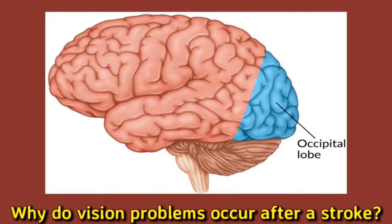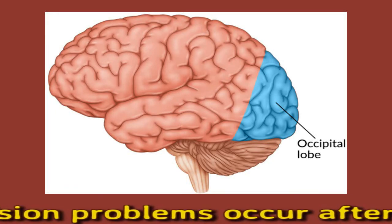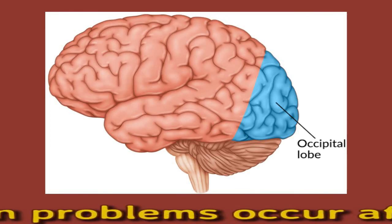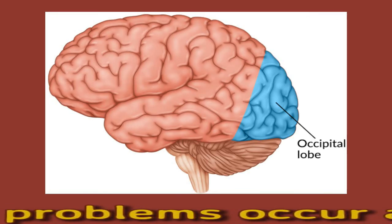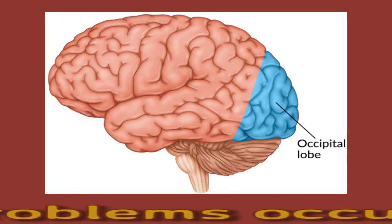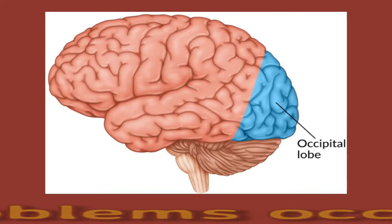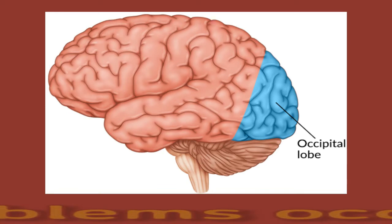Vision problems that a person had before a stroke may also worsen after a stroke, or add to any new visual impairment that it causes. Vision problems are very common after a stroke. According to research from 2019, about 60% of people who survive a stroke have a visual impairment to some degree. However, the percentage of people who experience symptoms varies widely among the types of impairment.